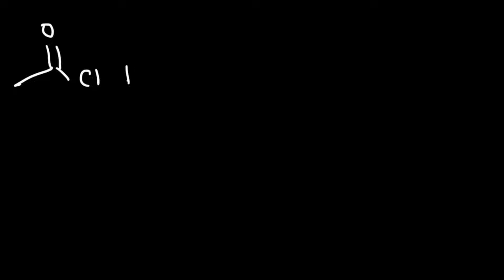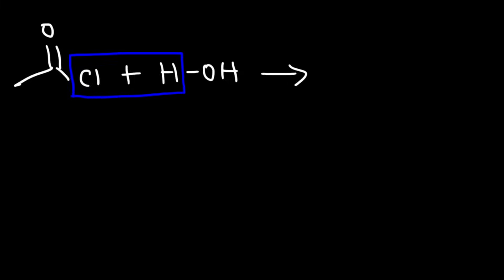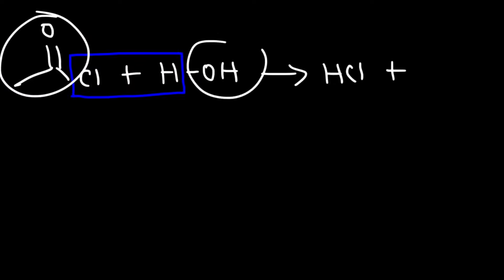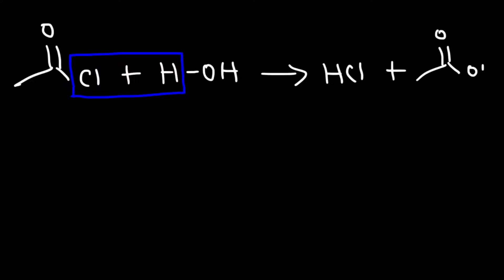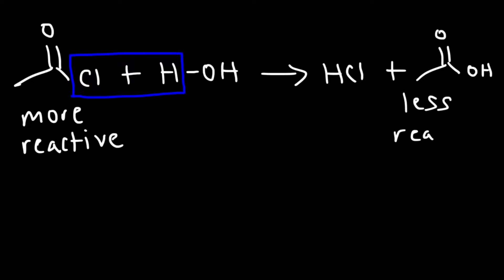Now let's focus on reactions that produce carboxylic acids, starting with an acid chloride. If we add water to a carboxylic acid derivative it's going to make a carboxylic acid. The leaving group Cl will pair up with a hydrogen atom from water, giving us HCl as a byproduct, and combining the remaining parts gives us the carboxylic acid. Since the acid chloride is more reactive than the carboxylic acid, the equilibrium favors the less reactive side — this is a product-favored reaction.